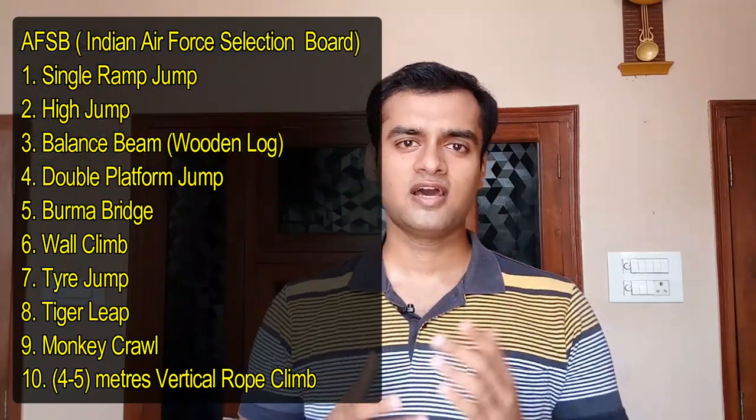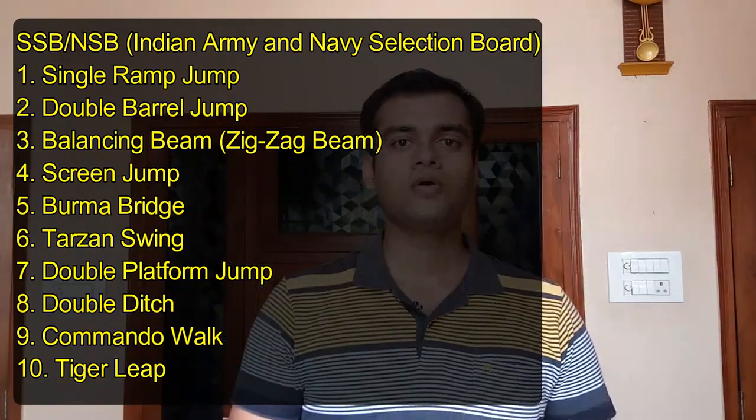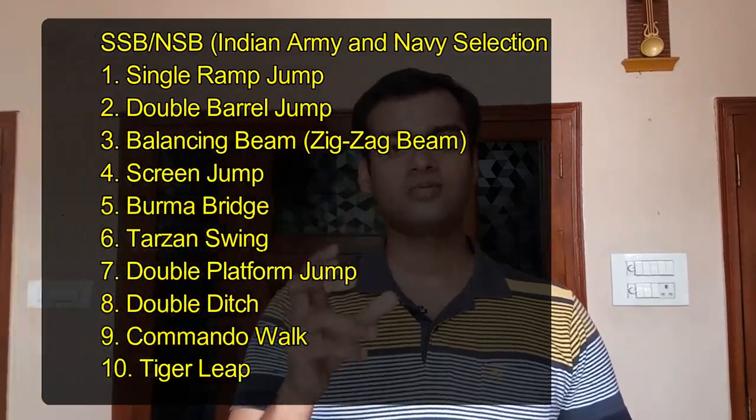Generally, everyone starts from the same starting point, but thereafter each candidate decides their own route a little bit. The GTO sir will tell you about every obstacle and how to tackle it. When you are on the ground, GTO sir will brief you, and you will see obstacles like the Burma Bridge, single ramp, and zigzag. You have to take a holistic view of all the obstacles, trace them, and fix their locations in your mind before you begin.